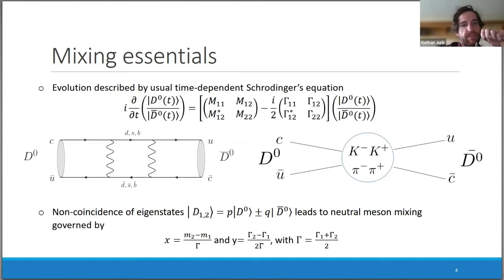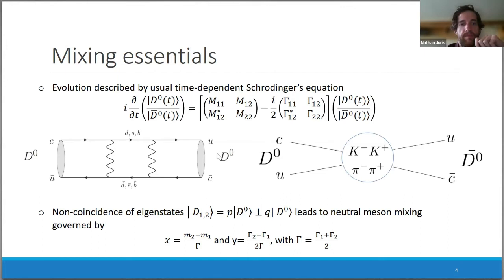The evolution of neutral meson systems is described by the time-dependent Schrödinger equation, where the first matrix describes the dispersive contributions and the gamma matrix describes the absorptive contributions. In the charm system, both the dispersive and absorptive parts are dominated by long-distance contributions.